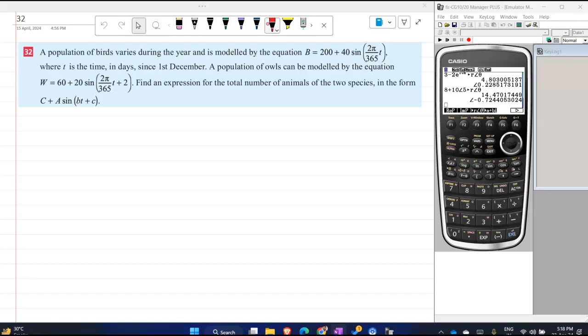So what I do is I will combine this. Your total would be B plus W, birds plus owl. So birds is 200 plus 40 sin(2π/365 T) plus 60 plus 20 sin(2π/365 T plus 2).